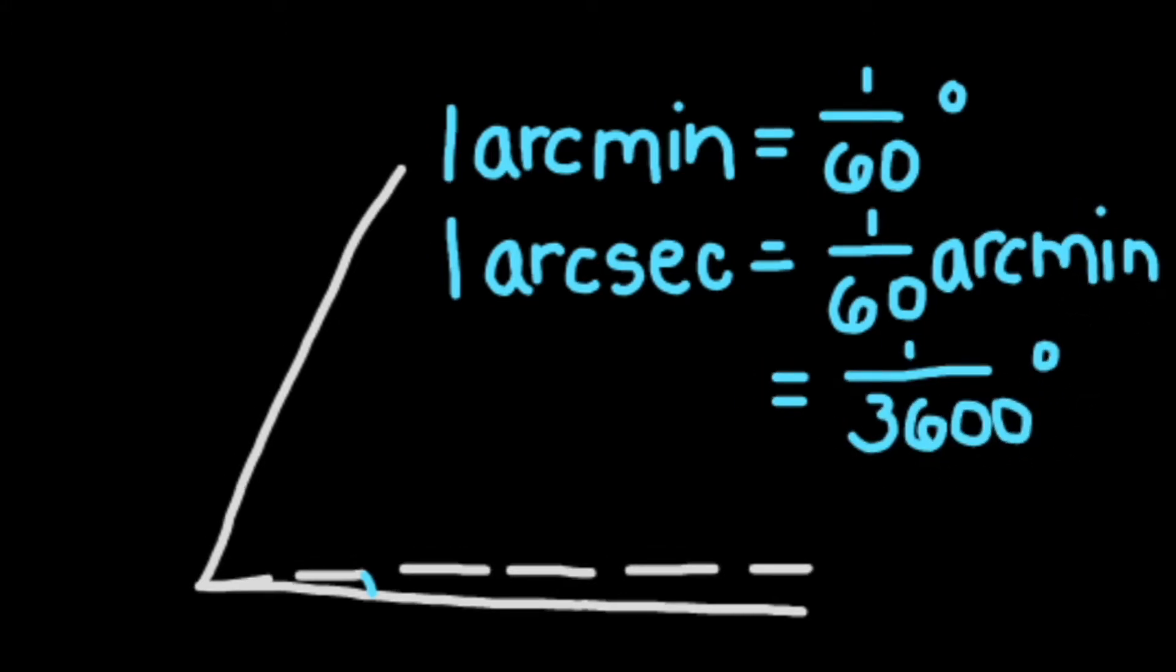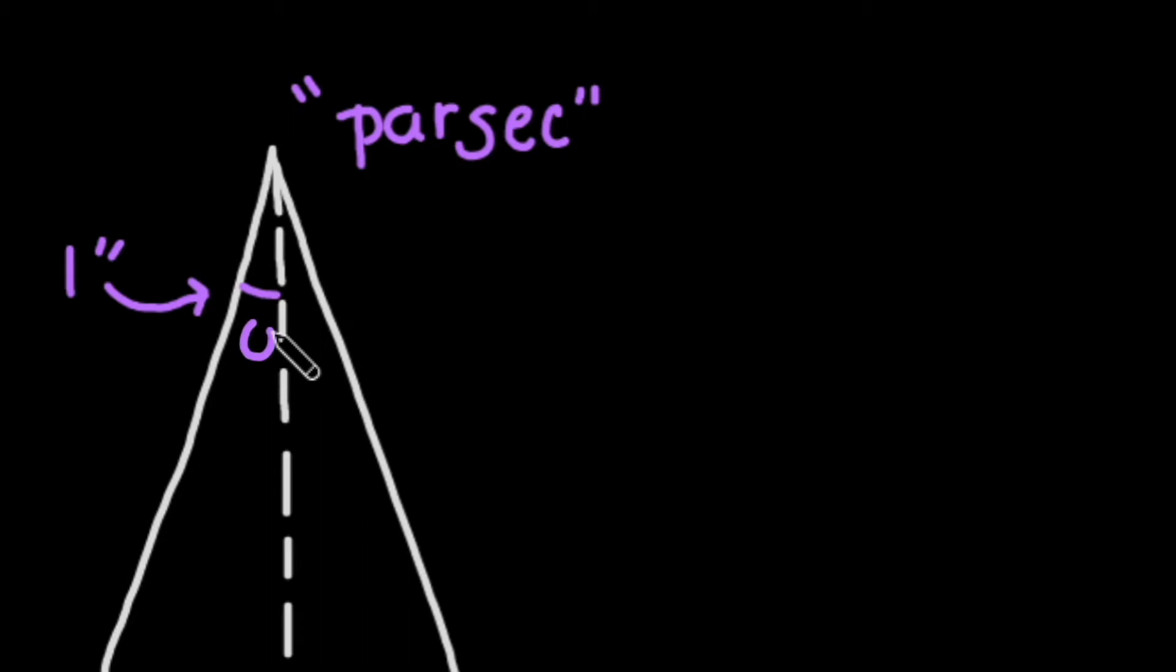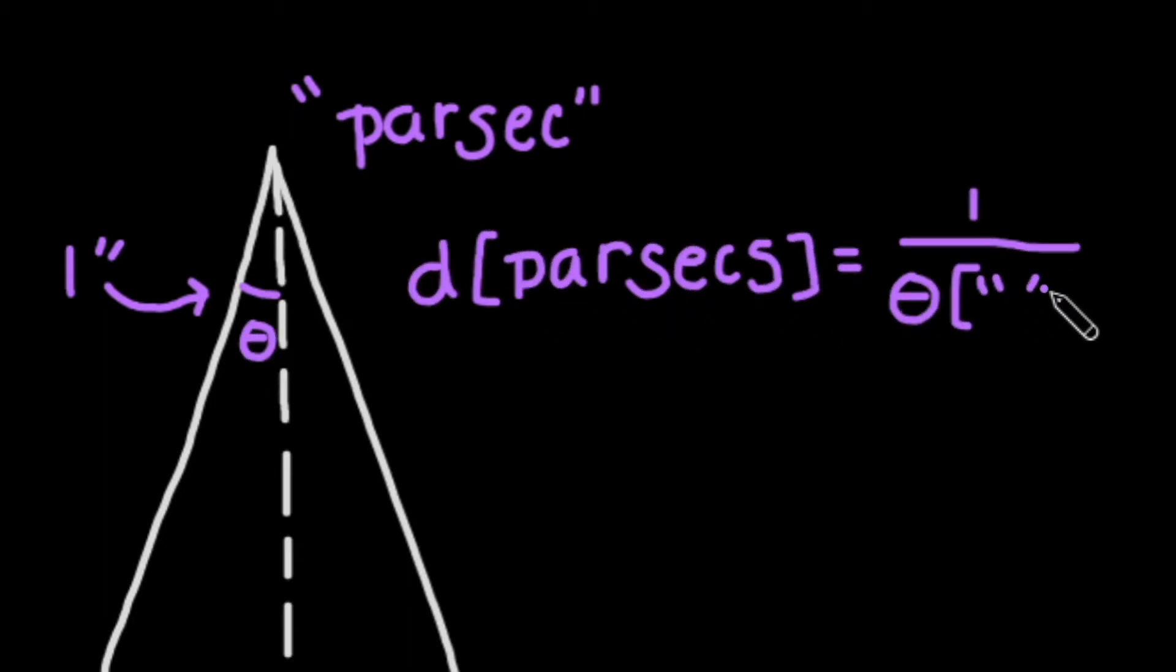For distance, we use a unit called parsec, which is equivalent to the distance to a star with only one arc second parallax. So the distance to a star written in parsecs is simply 1 divided by the parallax angle in arc seconds.